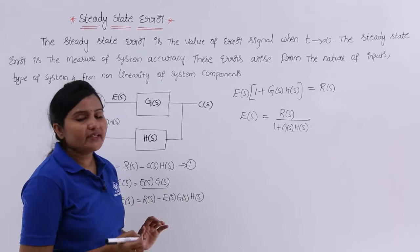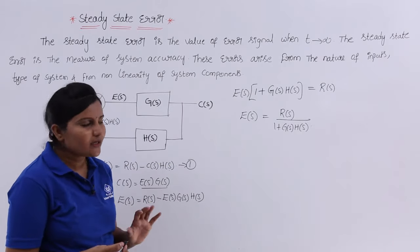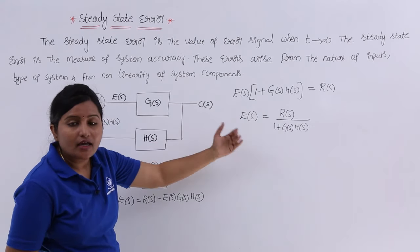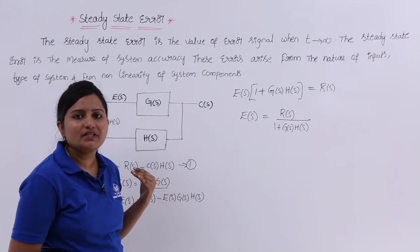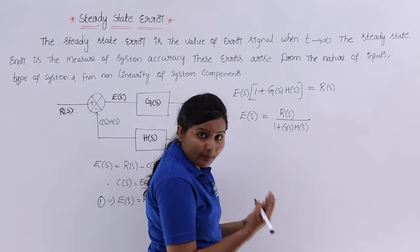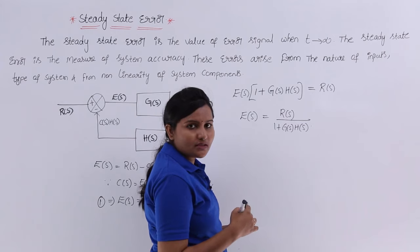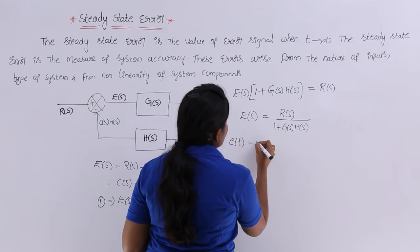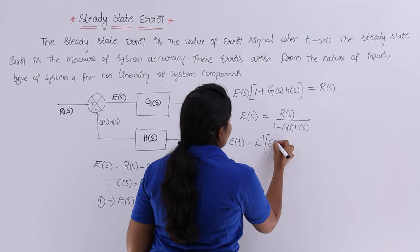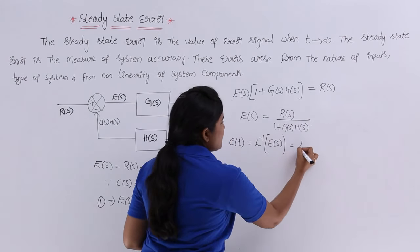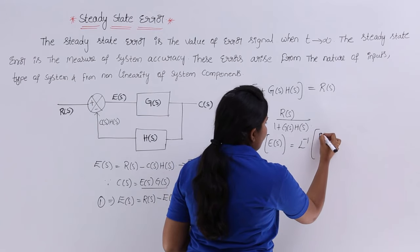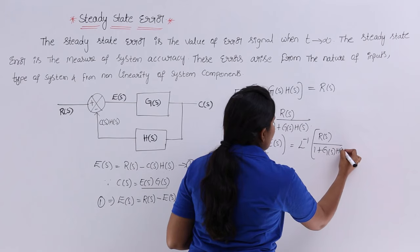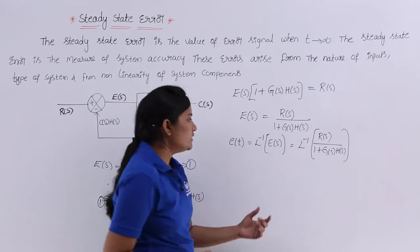This E(s) is the error signal in the frequency domain. If you want the time domain error signal, since this is in Laplace transform, we need to take the inverse Laplace transform of E(s), which is the inverse Laplace transform of R(s) / [1 + G(s)·H(s)], and that will give you the error signal e(t).